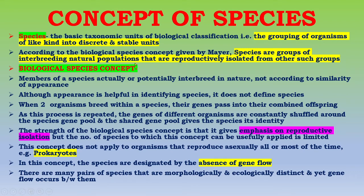This definition is significant because he defined it very clearly that species are groups of interbreeding natural populations that are reproductively isolated from other such groups. According to the biological species concept, members of a species actually or potentially interbreed in nature — not according to similarity of appearance.